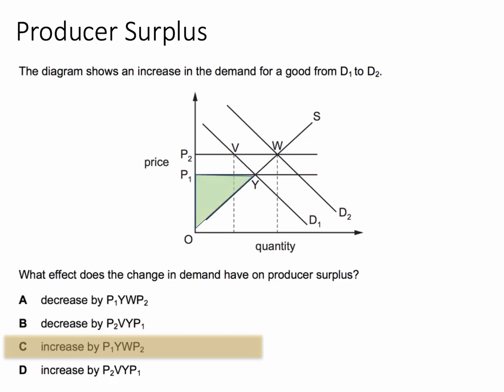So this was the original area, this is the new area, so the change is the bit above in yellow - P1, P2, W, Y, or P1, Y, W, P2 going the other way. So the change in producer surplus here is shown by answer C.